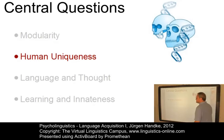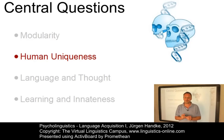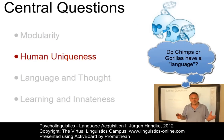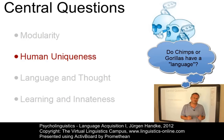Human uniqueness is another issue. Do only humans possess language? Or do other species also have the capacity to acquire language? Various attempts to teach chimpanzees and gorillas aspects of human language have not yet produced convincing evidence against the position that language is a uniquely human ability.